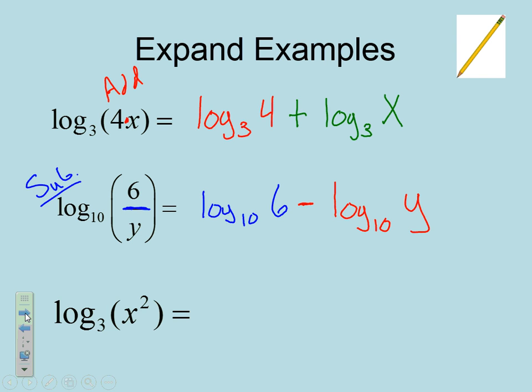This last one uses our last property — we have something to a power, so this is our power going to the exponent. We need to turn it into multiplication. We're just going to put this number out in front, so it's going to be 2 times log base 3 of x. We're just moving that 2 from the exponent out to the front.